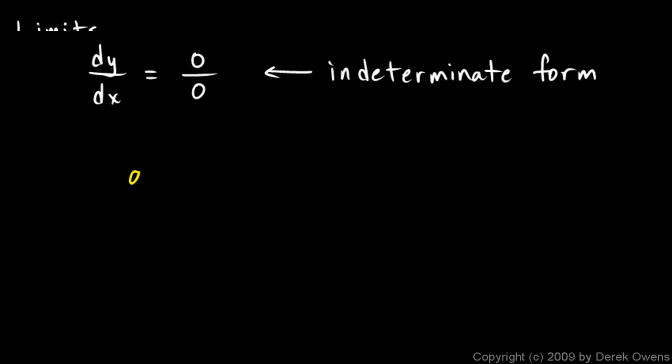Think about this fraction here, a over b. If a gets really tiny, well, that's okay. As the numerator shrinks really small and gets closer and closer to zero, the value of the fraction as a whole goes closer and closer to zero. This will be zero if the numerator is zero.